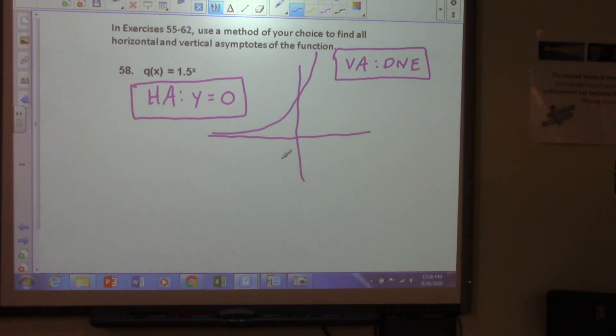Now, remember we talked about boundedness? Where is this function bounded? Bounded below, right? At y equals zero. So that's going to be it. And this is going to be the limit as x approaches negative infinity of 1.5 to the power of x is equal to zero.